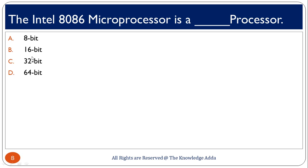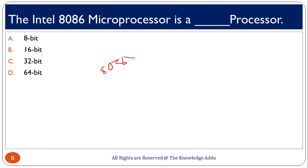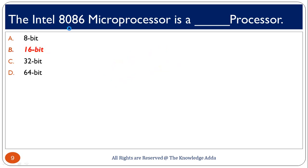The Intel 8086 microprocessor is what type of processor? During graduation we study about the 8085 and 8086 microprocessors. The 8085 is an 8-bit microprocessor and the 8086 is a 16-bit microprocessor, so the correct option is 16. The 8086 is a 16-bit microprocessor.